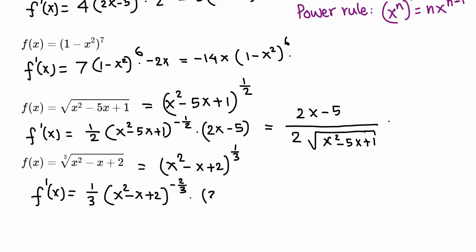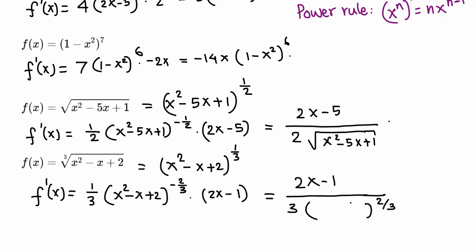Multiply by the derivative of the inner function (x² - x + 2): derivative of x² is 2x, minus derivative of x is 1, plus derivative of 2 is 0, giving (2x - 1). So the answer is (1/3)(x² - x + 2)^(−2/3) times (2x - 1). To simplify, move the negative exponent to the bottom: the final answer is (2x - 1) on top over 3(x² - x + 2)^(2/3).